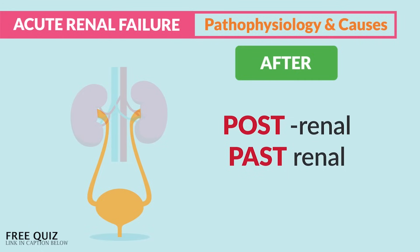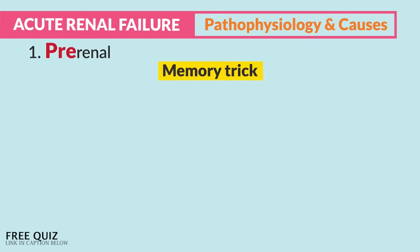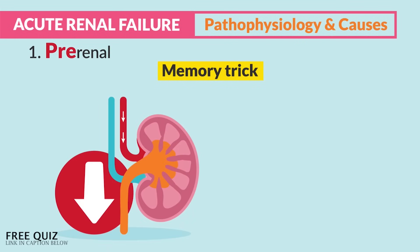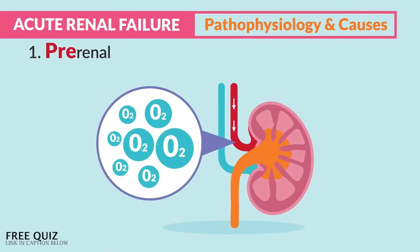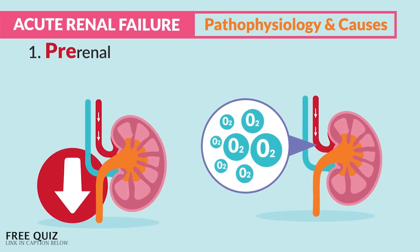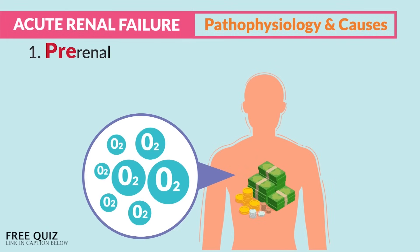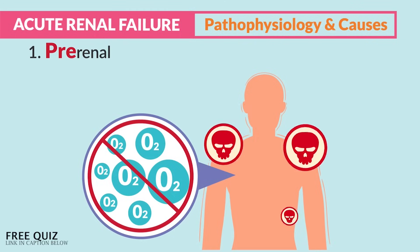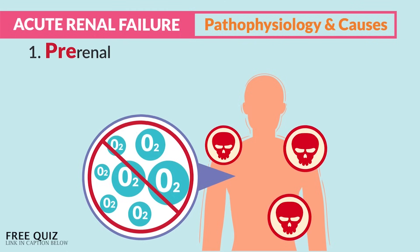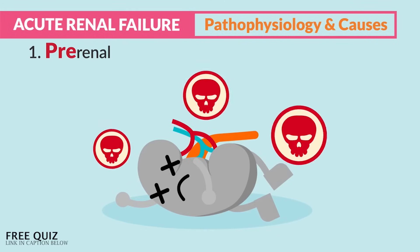For pre-renal, think of that decreased perfusion — oxygen-rich blood flow can't get to the kidneys. This decreased blood flow means decreased oxygen. Remember, oxygen is the money of the body: no money, no honey — no oxygen and the body goes broke. It's kind of like the kidney is suffocating to death.